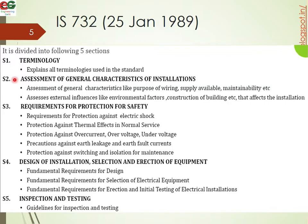Section 2 covers the assessment of general characteristics of installations — explaining what we need to consider, such as purpose of wiring, supply, maintenance, rain, sunlight, inside and outside the building, external influences such as environmental factors, and construction of the building. Indoor and outdoor environmental factors and effects of installation are all covered in this section.